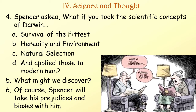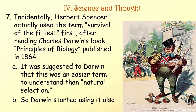What might we discover? Of course, Spencer took his prejudices and biases with him — that's part of the Enlightenment. Incidentally, Herbert Spencer actually used the term 'survival of the fittest' first, after reading Charles Darwin's book Principles of Biology, published in 1864. It was suggested to Darwin that this was an easier term to understand than 'natural selection,' so Darwin started using it also.